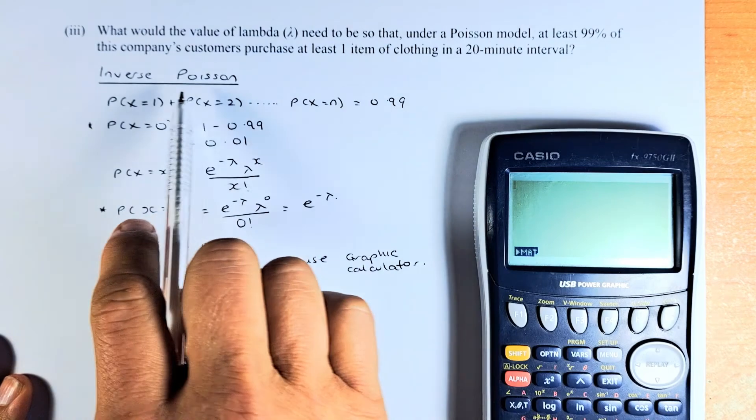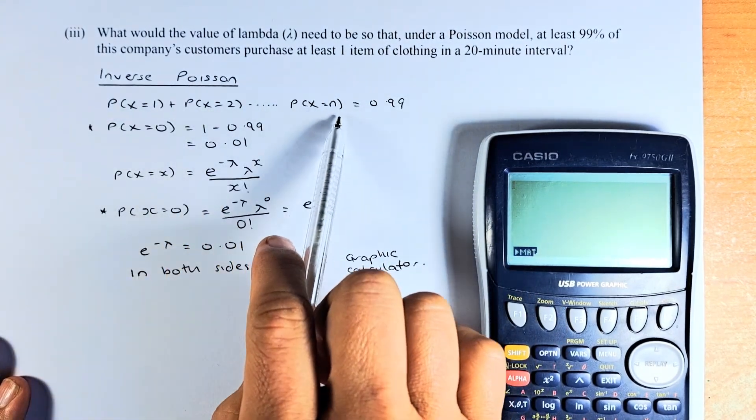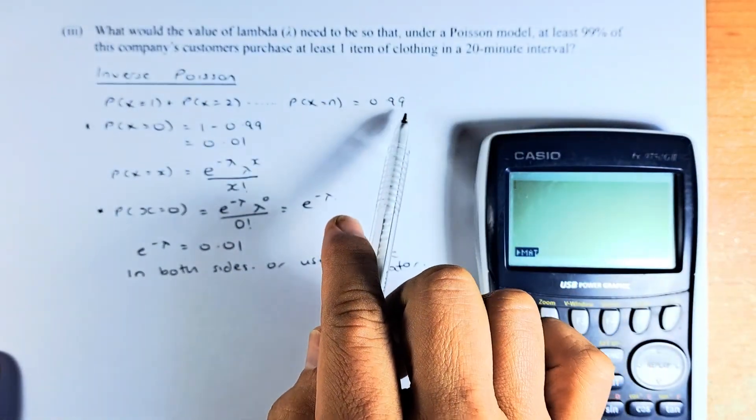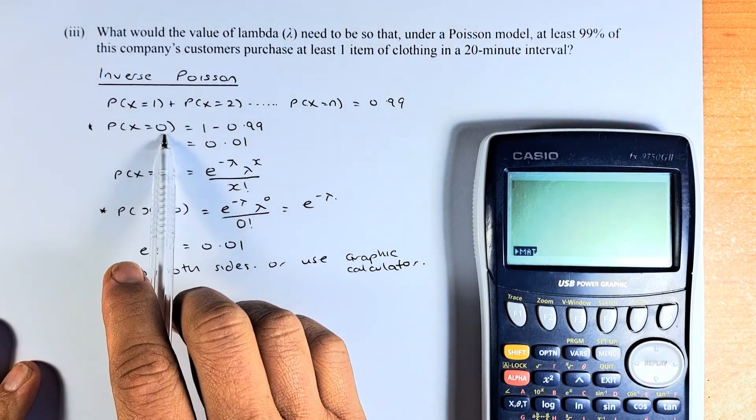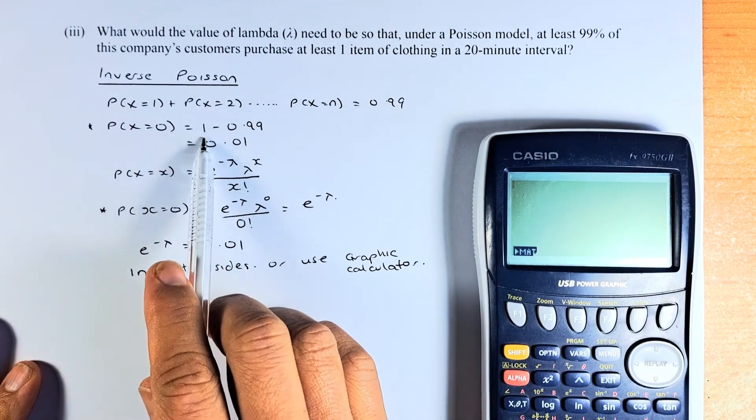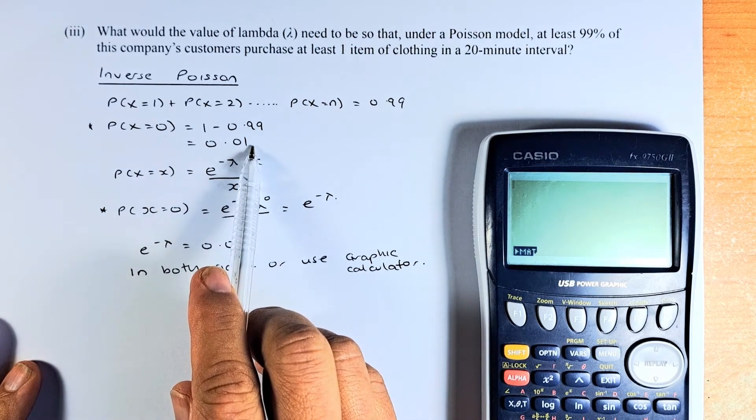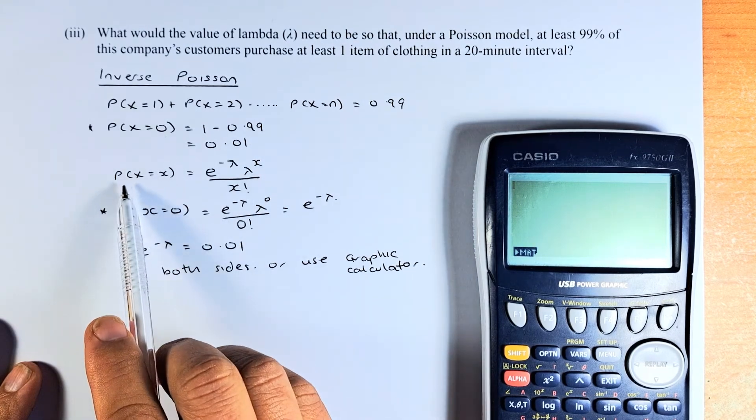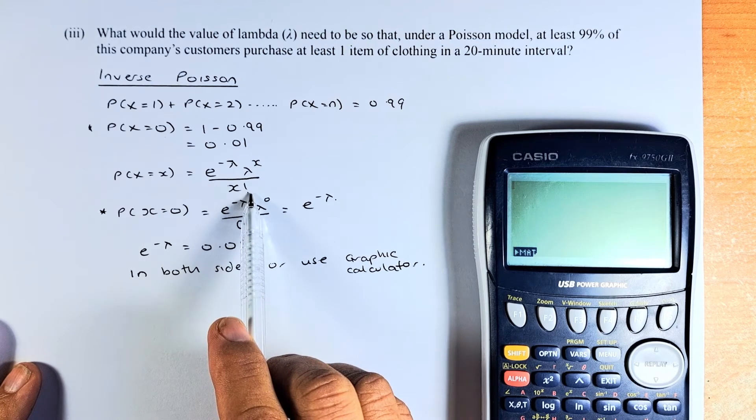We shall try to solve the inverse Poisson. What they say is that at least one item, so X equals 1, 2, 3, 4, 5 until the end is going to be 0.99 or 99%. To calculate probability of 0, means no item is purchased, it's going to be 1 minus 0.99, which is 0.01. So no purchase is 0.01. If you know the formula for Poisson, it's E minus lambda, lambda X over X factorial.